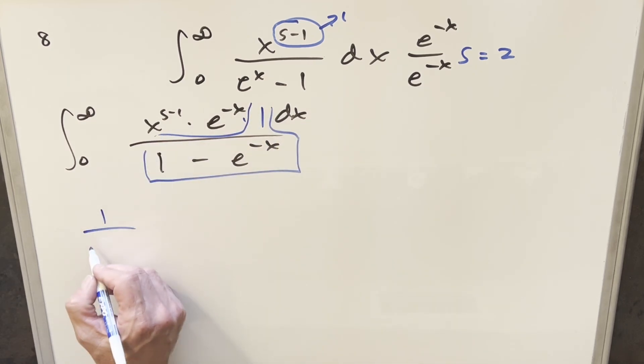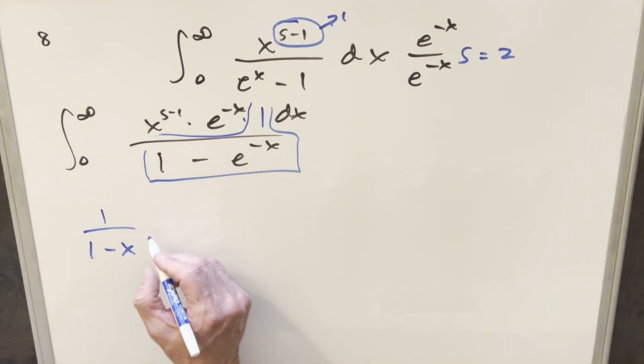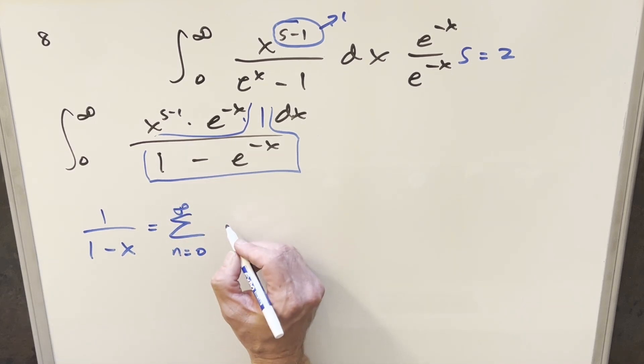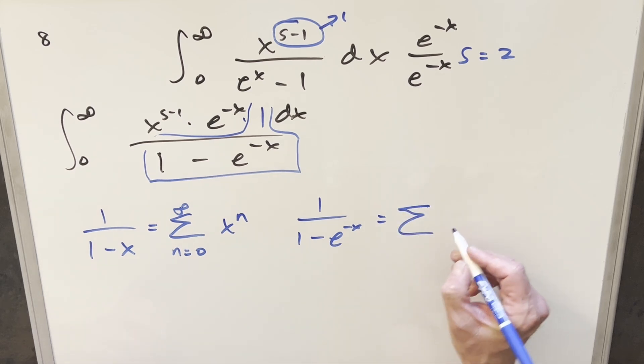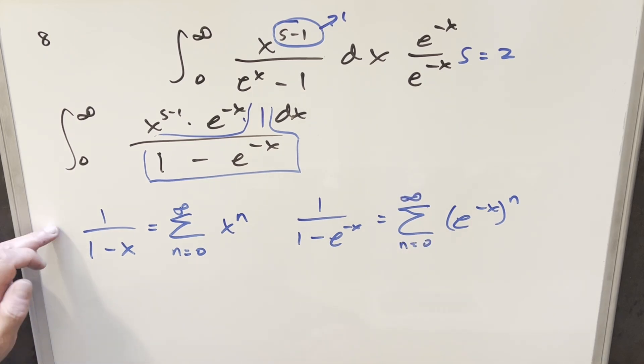Well, this looks a lot like one over one minus x, which is actually our formula for the geometric series. If we had something like this, we can say this is the same thing as the sum from zero to infinity of x to the n. So doing the same kind of thing, what I want to use is one over one minus e minus x. And just kind of plugging in over here, we want to say this is going to be like e minus x to the n. And of course, for the geometric series, in order for this to converge, we have this condition that the absolute value of x needs to be less than one.